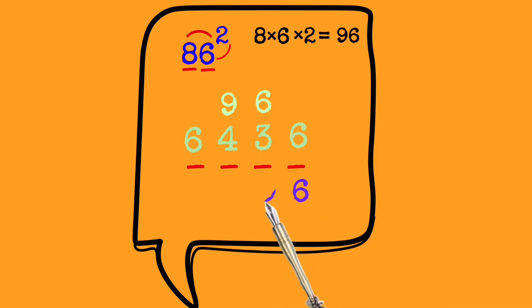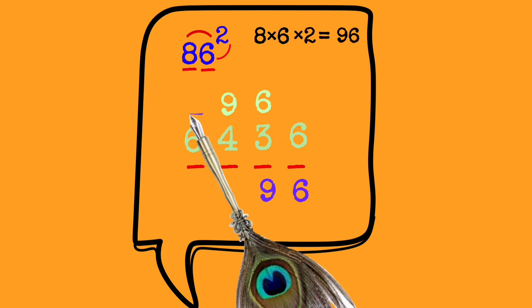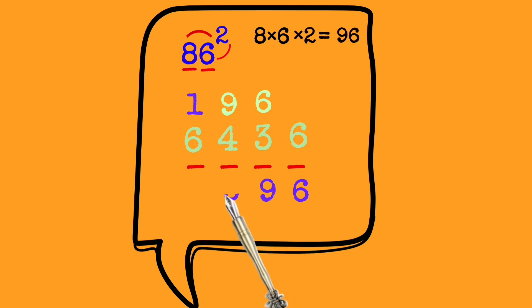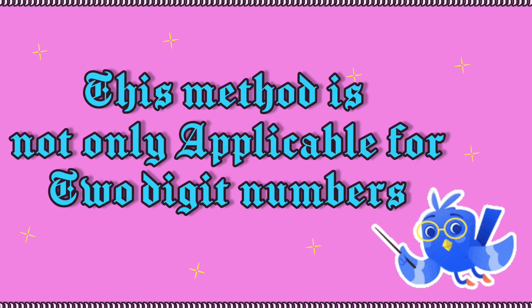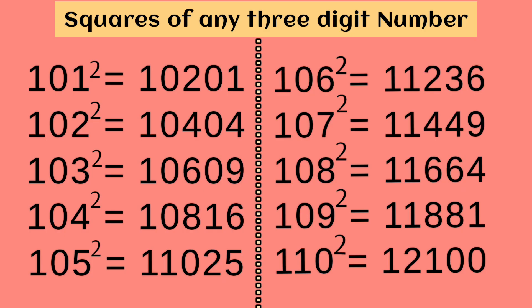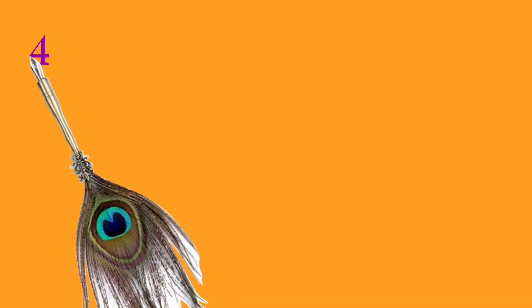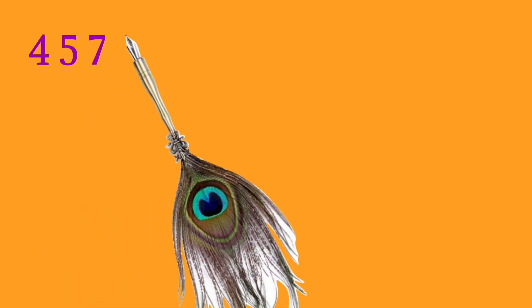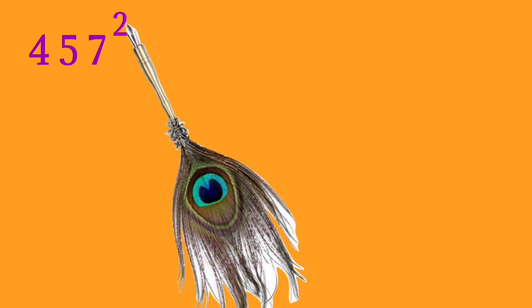We get the answer 7396. Thus, squares of two-digit numbers are very easy. This method is not only applicable for two-digit numbers - we can also find the squares of three-digit numbers using this simple method. For example, let us take the three-digit number 457. To find the square value, consider six empty blanks. Separate the number 457 as 45 and 7.